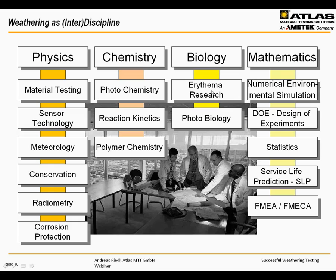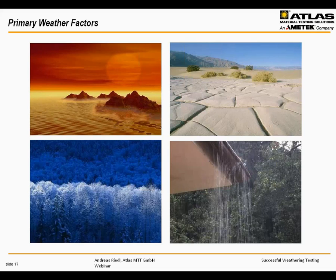Weathering is truly interdisciplinary. You see here different fields of expertise that may be combined to solve a certain weathering problem — for example, erythema research in biology to find out how long a sunscreen product actually protects against the sun, or conservation science for protecting artwork in museums from solar or lamp radiation. This is not a complete list but it would be a nice curriculum for a weathering engineer college course.